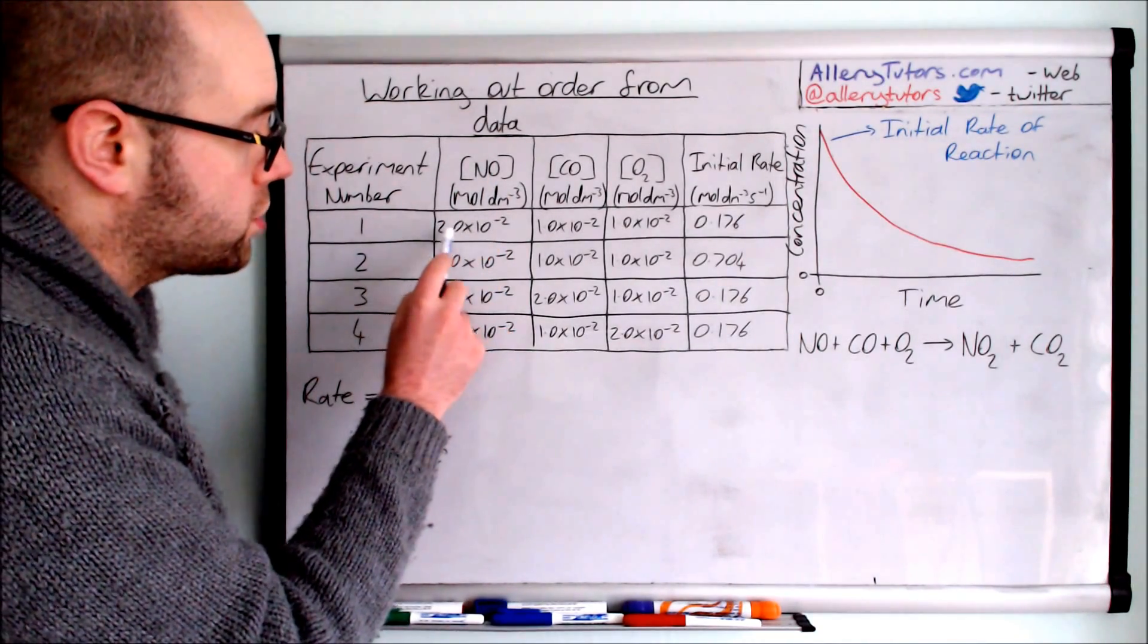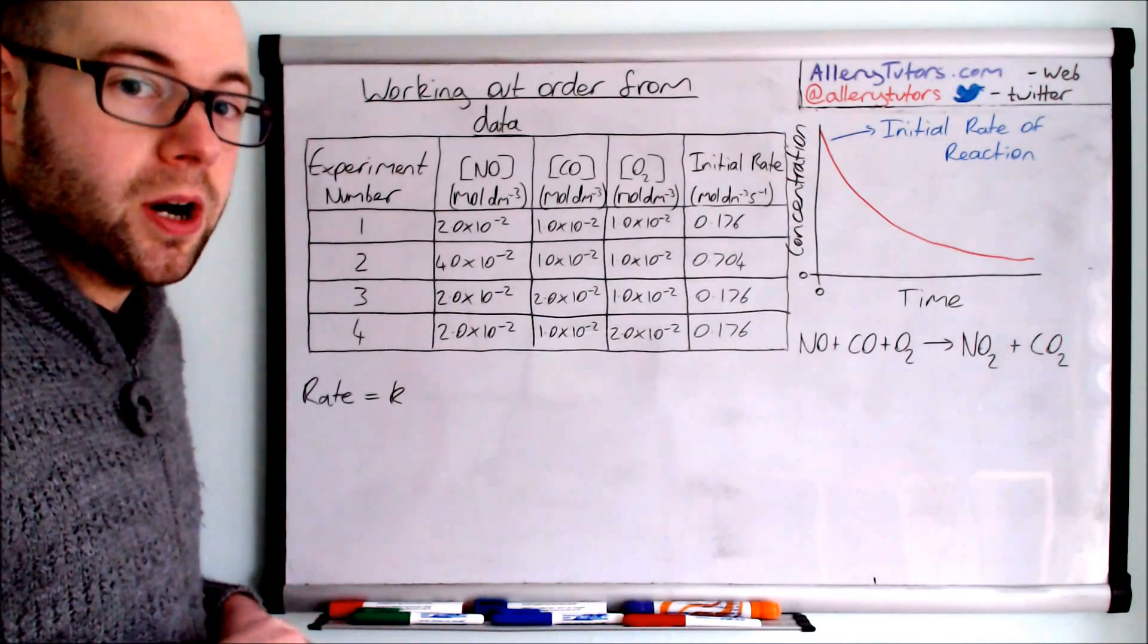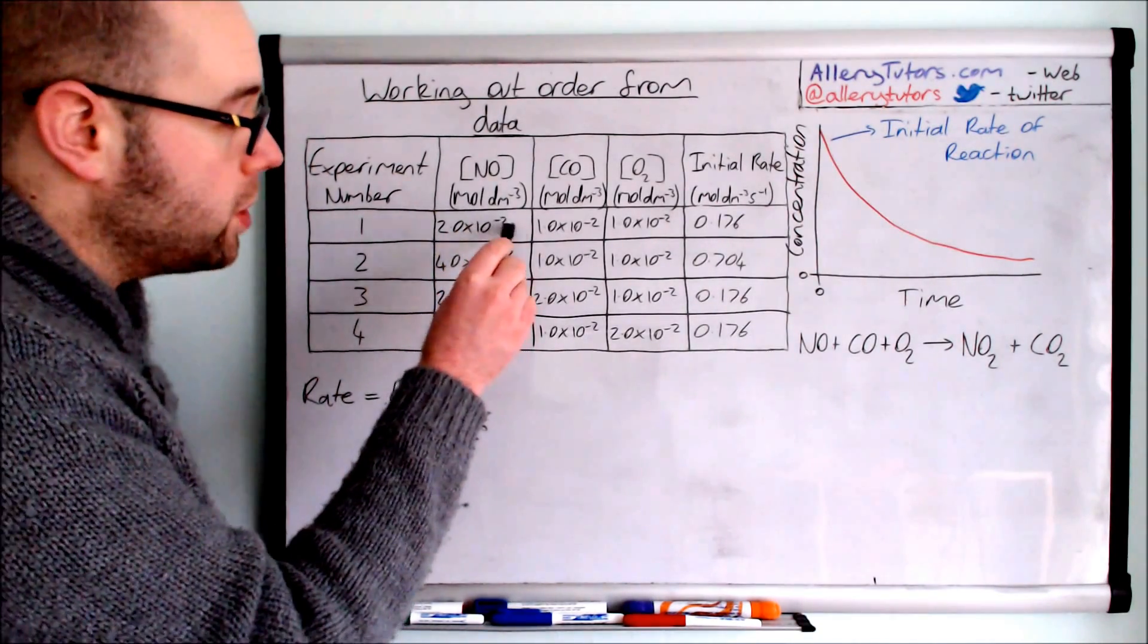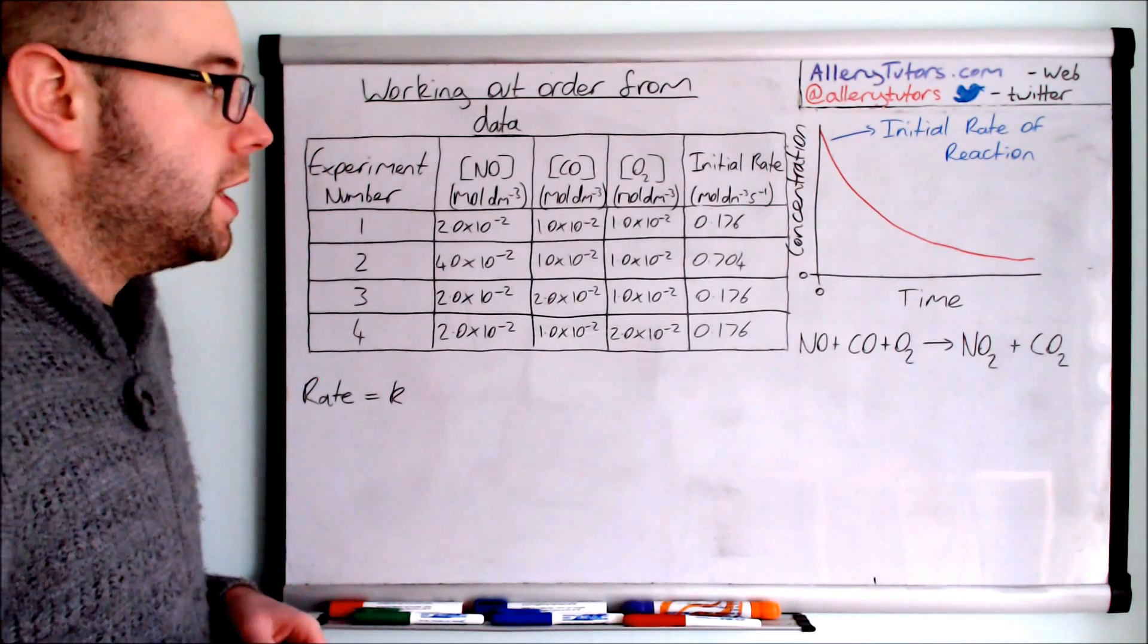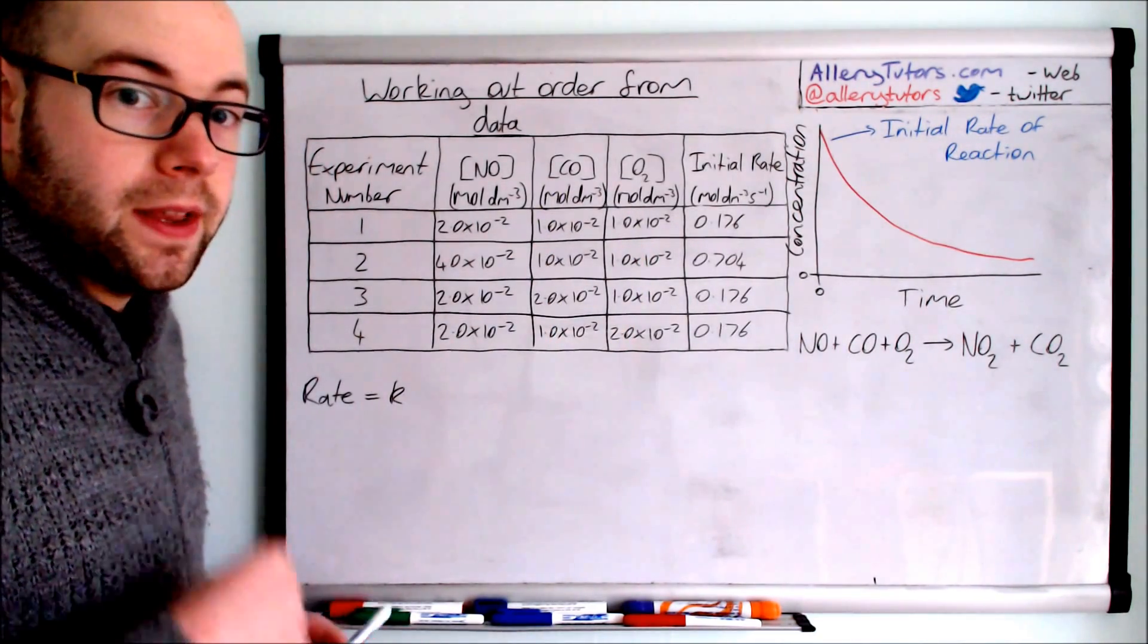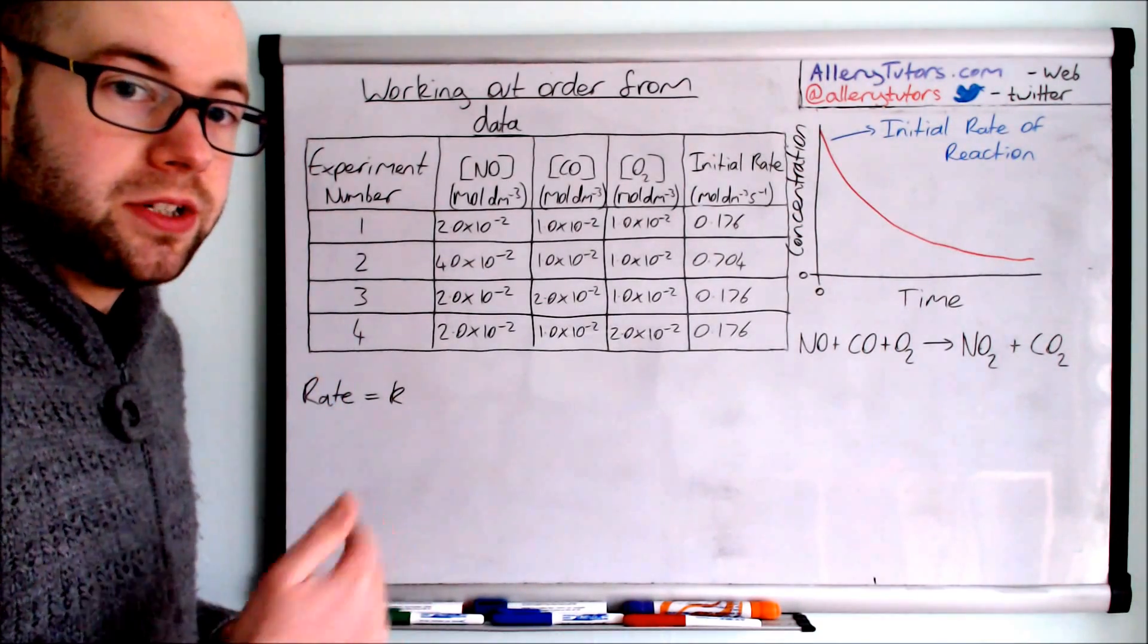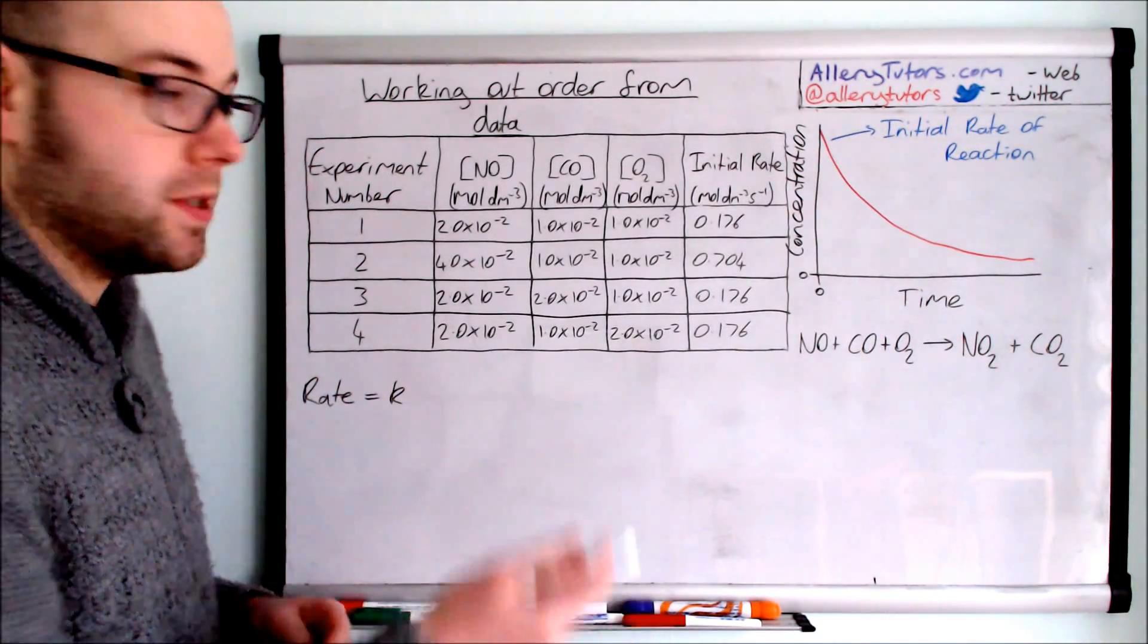You can see here that we've got 2.00 times 10 to the minus 2 moles per decimeter cubed of NO. What we're looking for is a change in NO but ideally we're looking for a reaction where we don't get a change in CO or O2. That way we can actually measure the effect of changing the concentration of NO on the rate, and hence we work out the order.